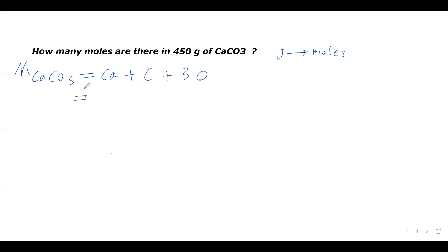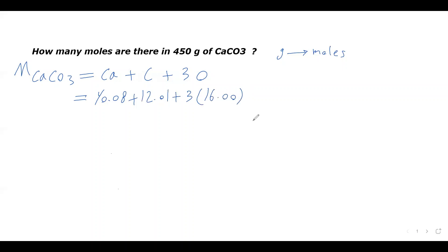By looking at your periodic table, you can plug in the molar mass of Ca, which is 40.08, plus the molar mass of carbon, which is 12.01, plus three times the molar mass of oxygen, which is 16.00. Once you add these values up, you will get the molar mass of CaCO₃, which is 100.09 grams per mole.